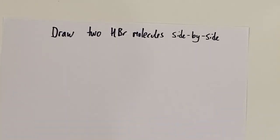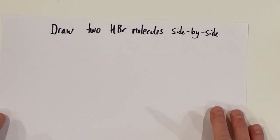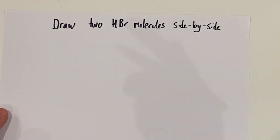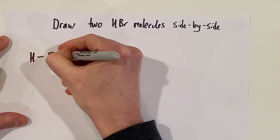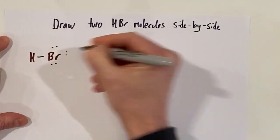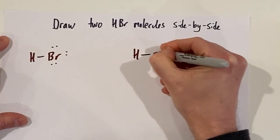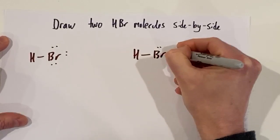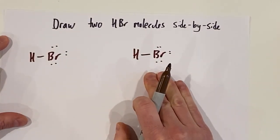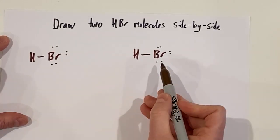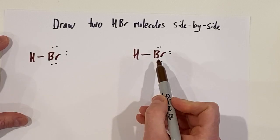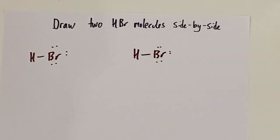Draw two HBr molecules side by side. Whenever we have to draw molecules, we're going to be doing Lewis dot diagrams. HBr. You'll notice I'm jumping straight to the final product here. If you can't get to the Lewis dot diagram, then please watch some other videos to get there.